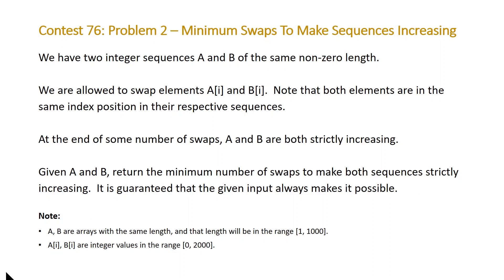The problem states we have two integer sequences a and b of the same non-zero length. We are allowed to swap elements a and b, where both elements are at the same index position in their respective sequences. At the end of some number of swaps, a and b are both strictly increasing. Given a and b, return the minimum number of swaps to make both sequences strictly increasing. It is guaranteed that the given input always makes it possible.